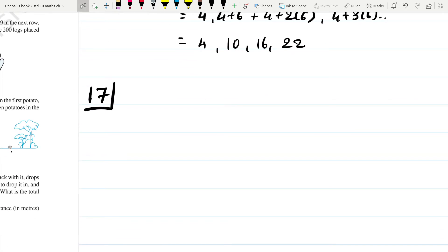Find the 20th term from the last term of AP: 3, 8, 13, dot dot dot, 253. Now this can be done in two ways. Either I take the AP from right to left or left to right.